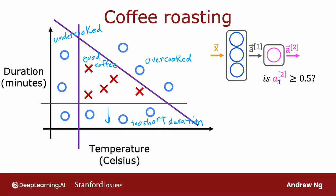So the task is, given a feature vector x with both temperature and duration, say 200 degrees Celsius for 17 minutes, how can we do inference in a neural network to get it to tell us whether or not this temperature and duration setting will result in good coffee or not?